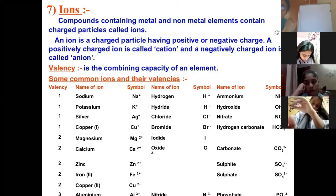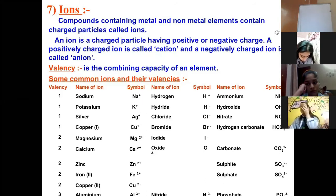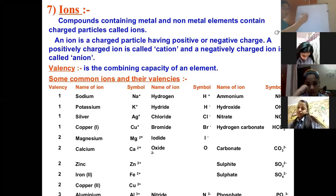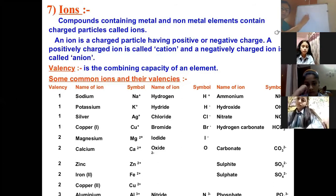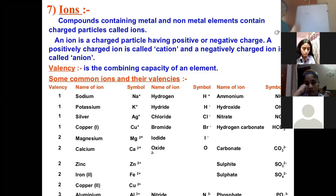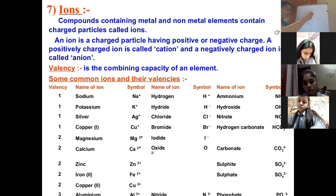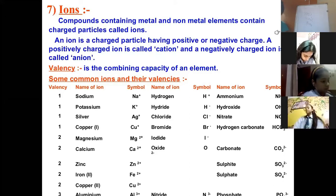Today we'll learn how to write chemical formulas. First, let's understand polyatomic ions. Polyatomic ions are a group of atoms which behave like a single unit. For example, OH is a group of two atoms — oxygen and hydrogen. Groups like CO₃ and SO₃ behave as a single unit and have a valency; these are called polyatomic ions.